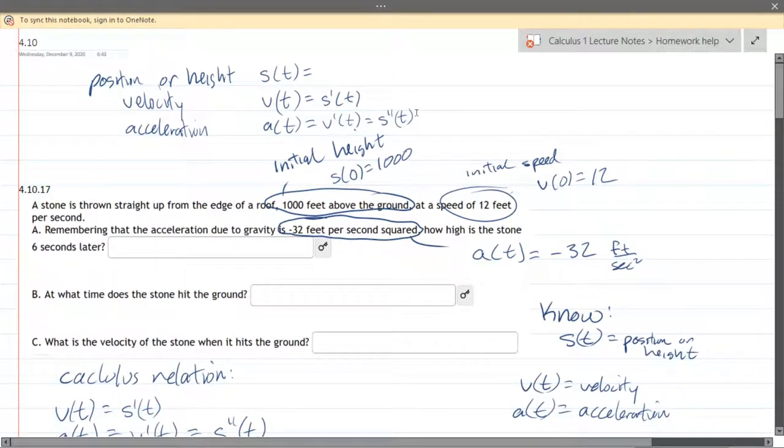Okay so all we really know are some initial conditions which we wrote down and the acceleration is constant negative 32. I wrote down the units feet per second squared.